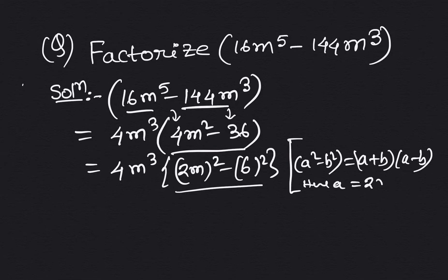And here a equals to 2 into m and b equals to 6. Now apply this in here, 4m cube, and here we can apply a plus b into a minus b, which is 2m plus 6 and 2m minus 6.